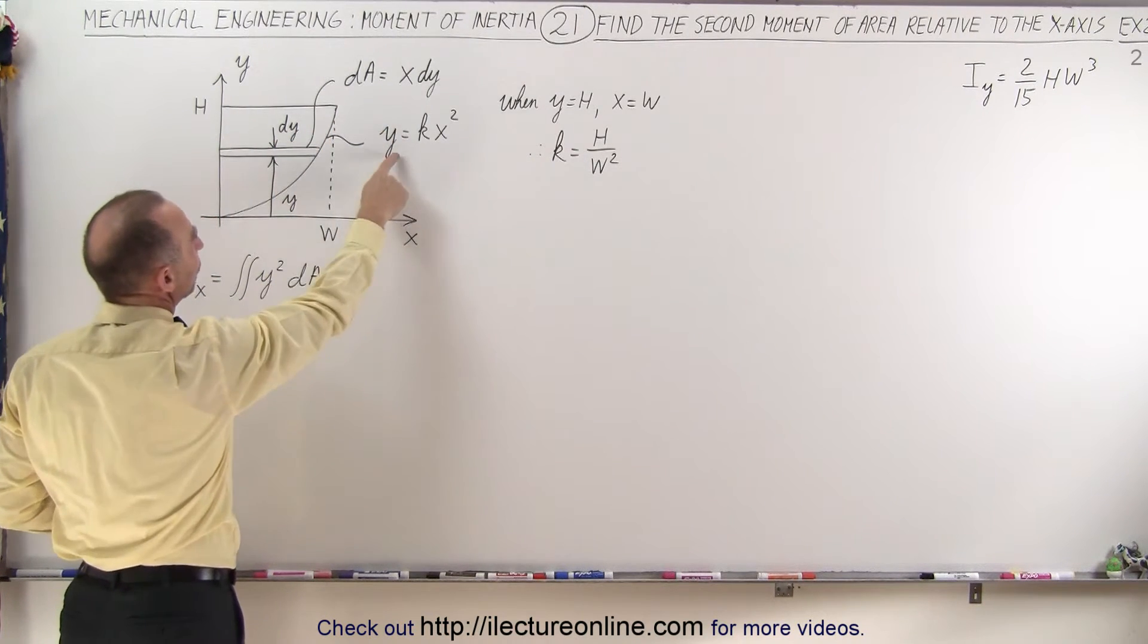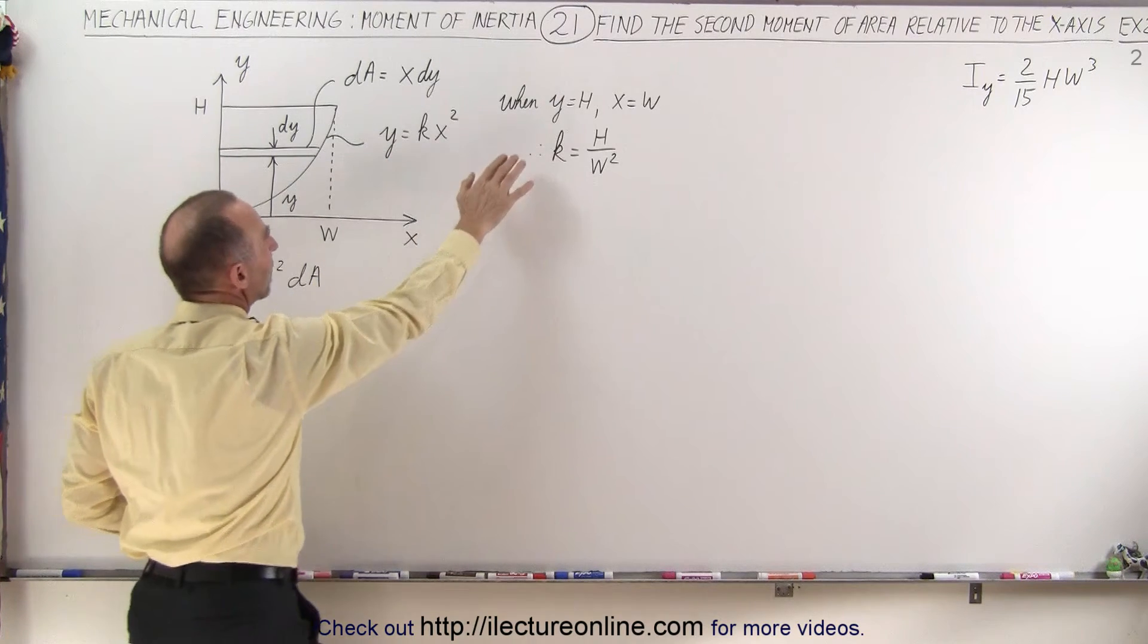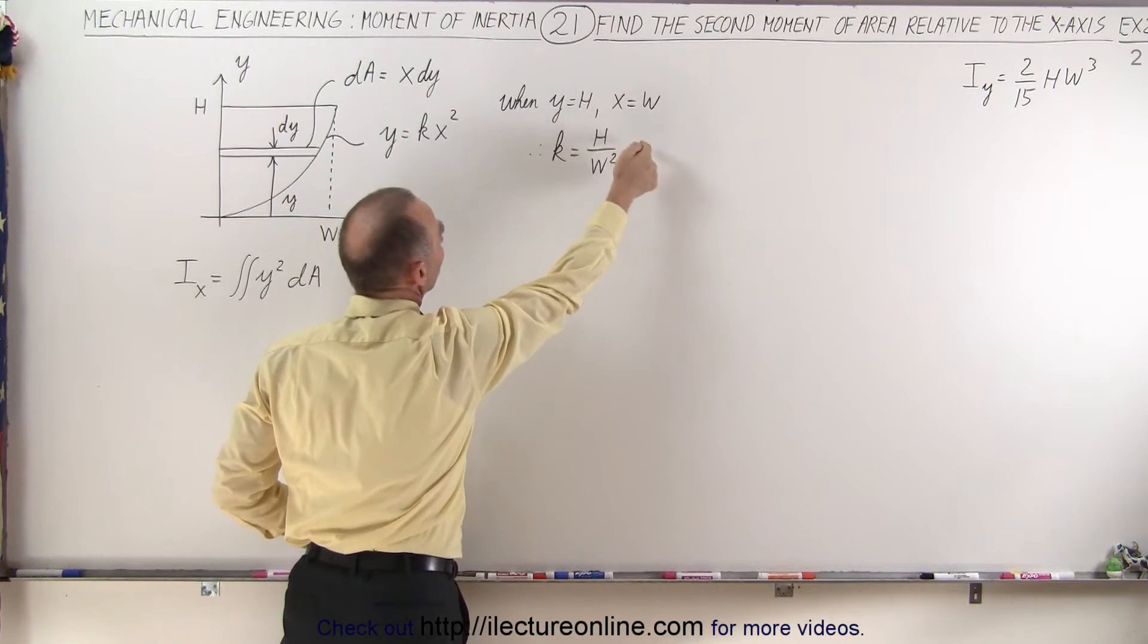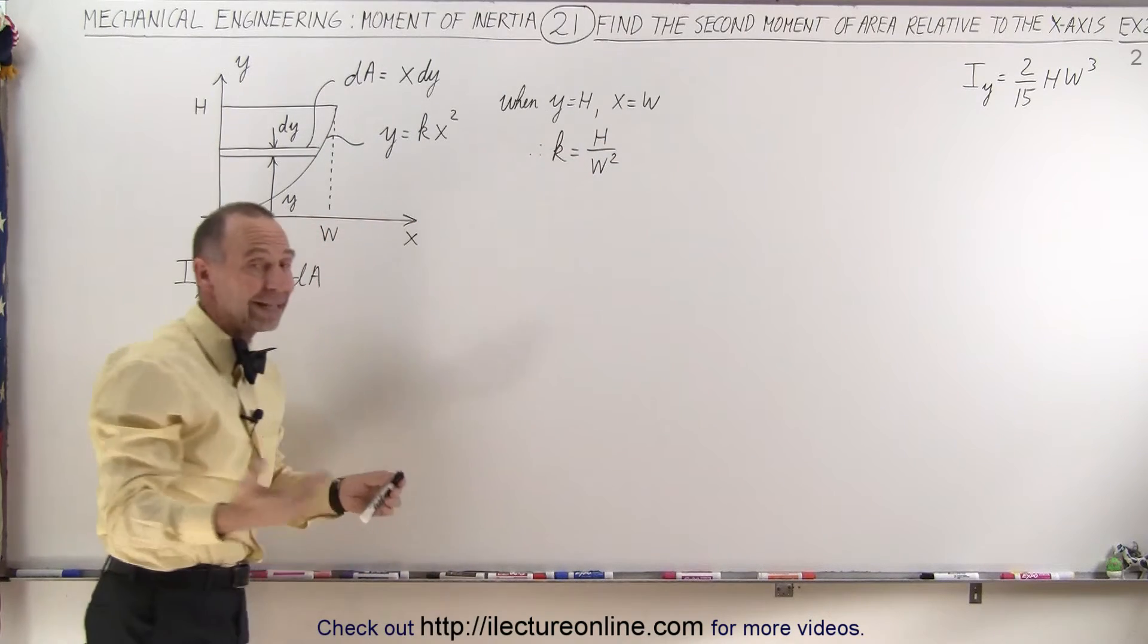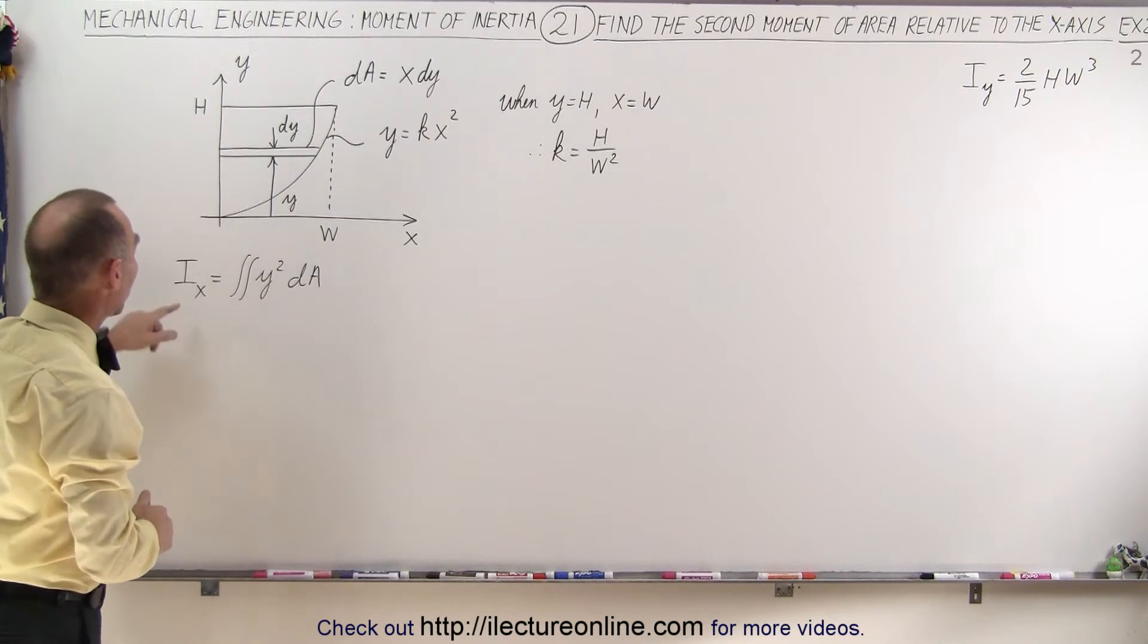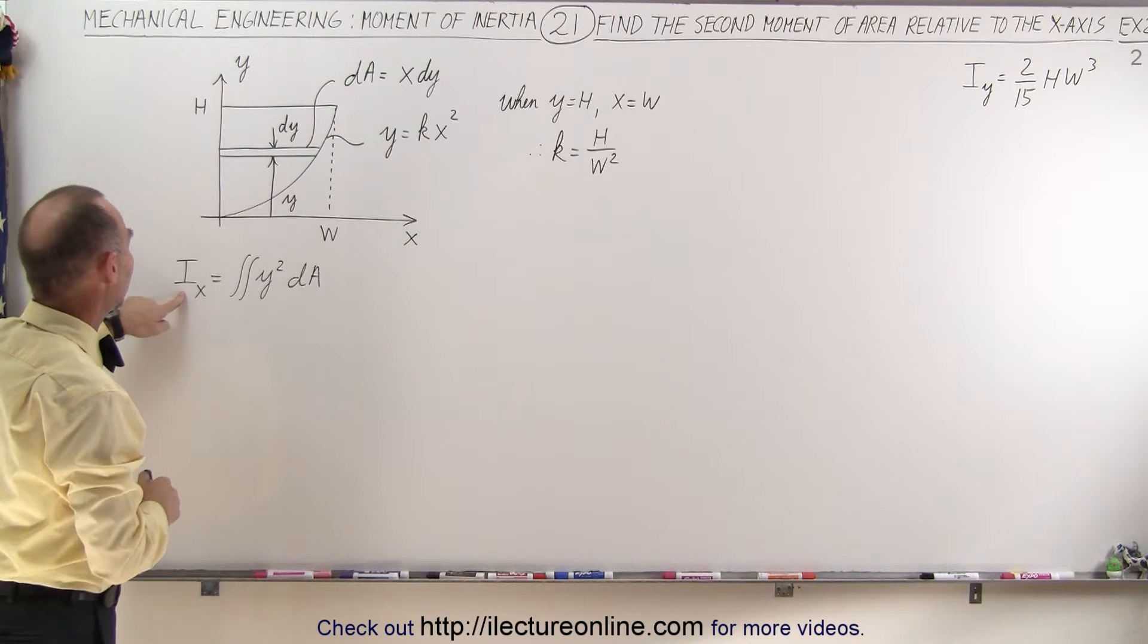The equation still is y equals kx squared, and when y equals h, x equals w, so we can solve for k in terms of h and w. And our equation now is going to look like this.